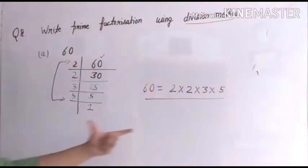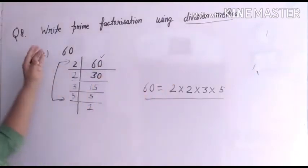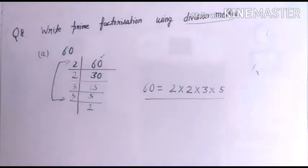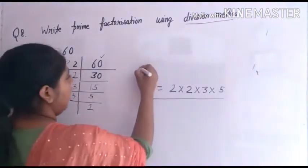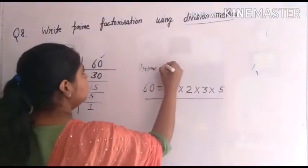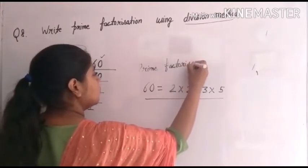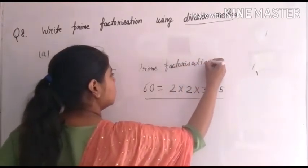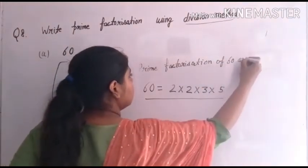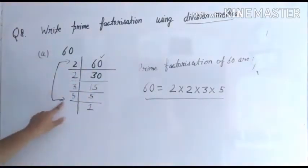So this is done, children — our prime factorization using division method. We used the division method to find the prime factorization. Prime factorization of 60: the prime factorization of 60 is written as 2 × 2 × 3 × 5.